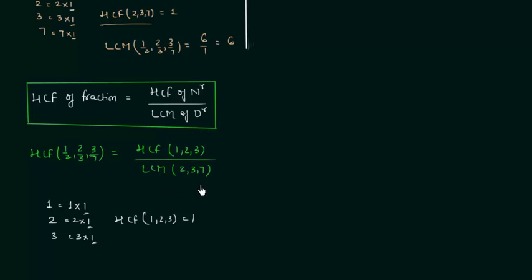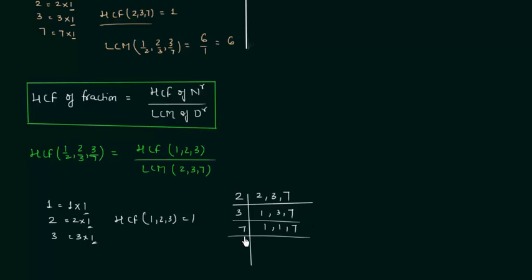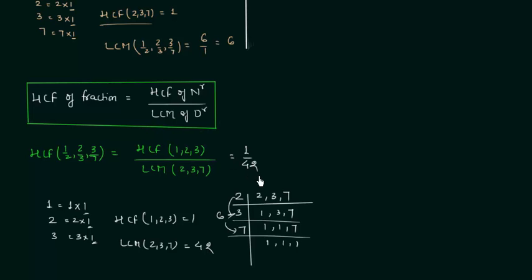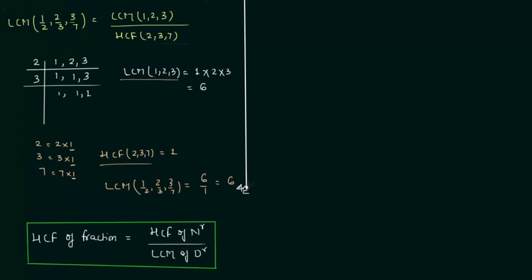Now we find the LCM of the denominators 2, 3, 7 using the division method. LCM of 2, 3, 7 = 2 × 3 × 7 = 42. So the HCF of the fractions equals 1/42. To summarize: the LCM of the fractions is 6 and the HCF is 1/42.